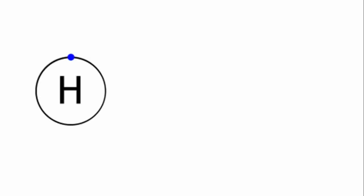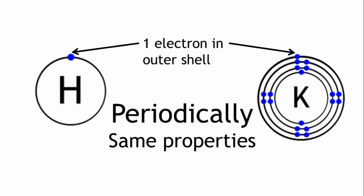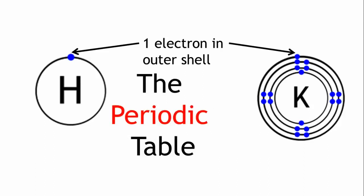As you move from the light elements to the heavy elements, you keep periodically coming across the same properties, which is why it's called the periodic table.